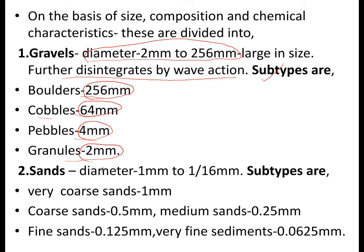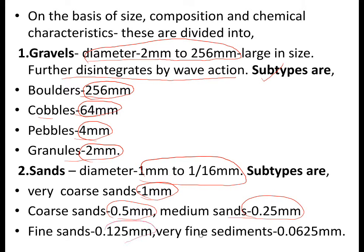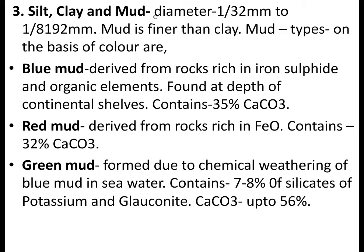Sands have a diameter of 1 mm to 1/16 mm. Subtypes include very coarse sands (1 mm), coarse sands (0.5 mm), medium sands (0.25 mm), fine sands (0.125 mm), and very fine sediments (0.065 mm). Silt, clay, and mud have a diameter of 1/32 mm to 1/8192 mm — these are very fine sediments, with mud being finer than clay.